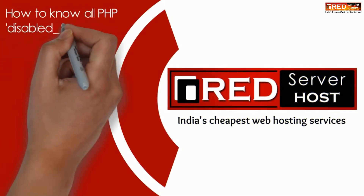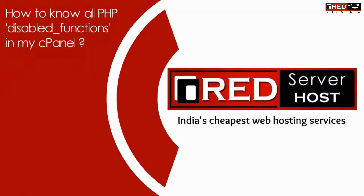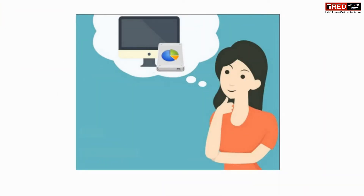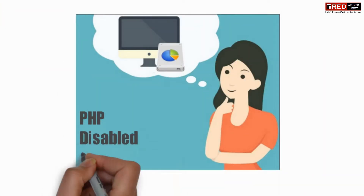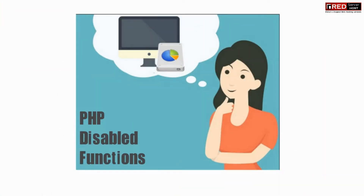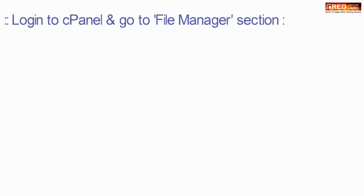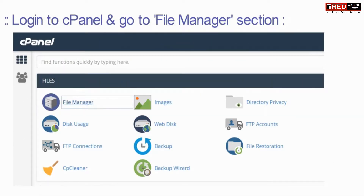Today in this video we will learn about how to know all PHP disabled functions in cPanel. For that, login to cPanel and then go to File Manager.